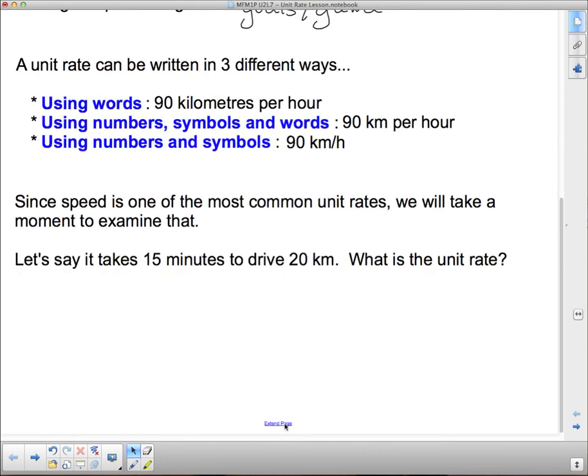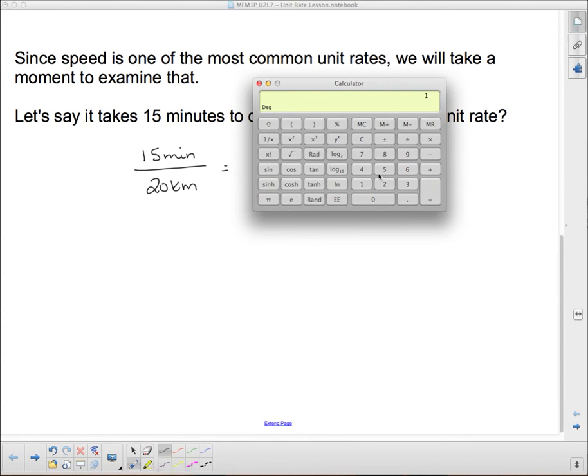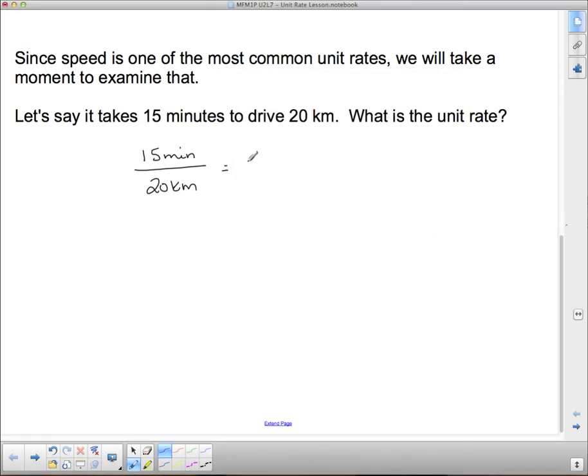Since speed is one of the most common unit rates, we're going to take a moment to examine what is talked about for speed. So let's say it takes 15 minutes to drive 20 kilometers. There are actually more than one unit rate I can get out of this little bit of information. So, it takes 15 minutes to drive 20 kilometers. If I take my calculator and I take the top, 15, and I divide it by the bottom, 20, I get 0.75.